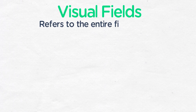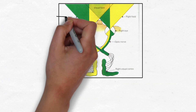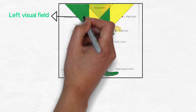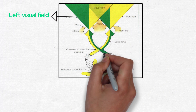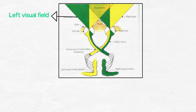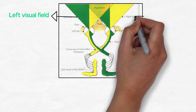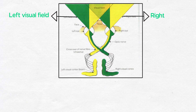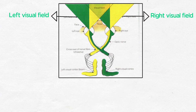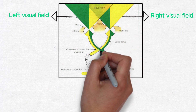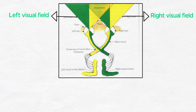The visual fields refers to the entire field of vision. Images from the left visual field project to the nasal retina of the left eye and to the temporal retina of the right eye, shown here in green. Images from the right visual field project to the temporal retina of the left eye and the nasal retina of the right eye, shown here in yellow.